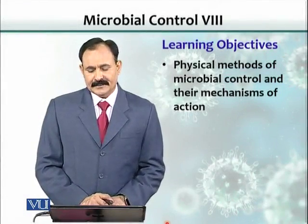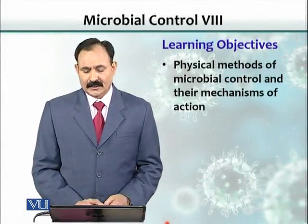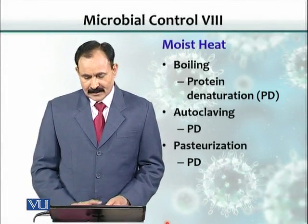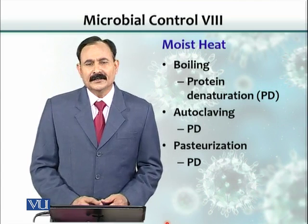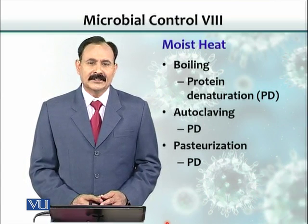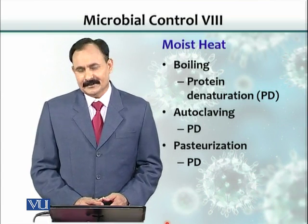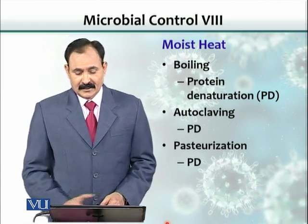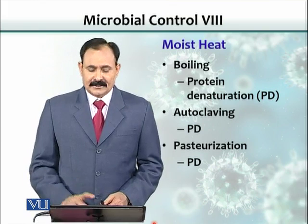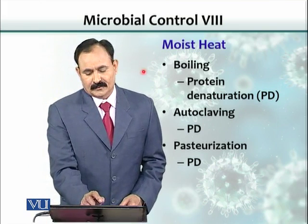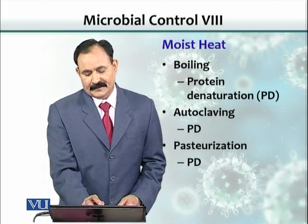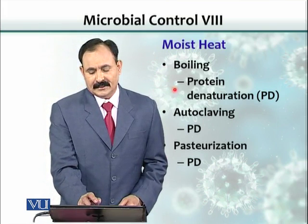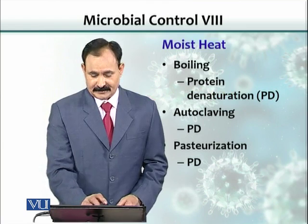Learning objectives include physical methods of microbial control and their mechanisms of action. Heat is a very commonly used agent, and it is a cheap way to get rid of bacteria or microbial load. There are various forms of heat. One is moist heat — boiling is one example, autoclaving is another, pasteurization is another. All these have protein denaturation as their mechanism of action.